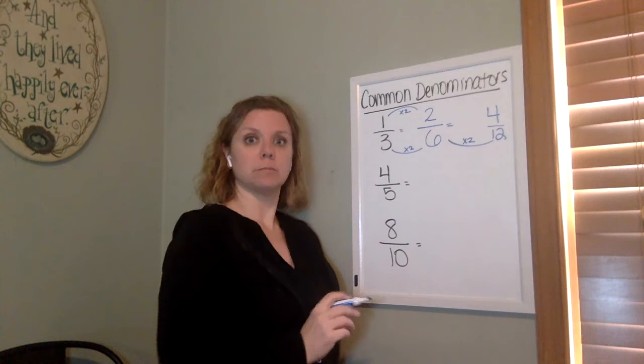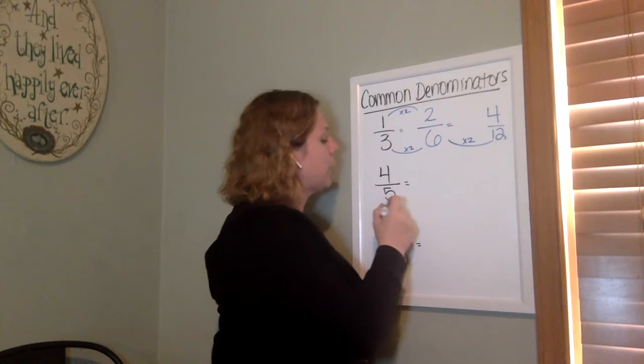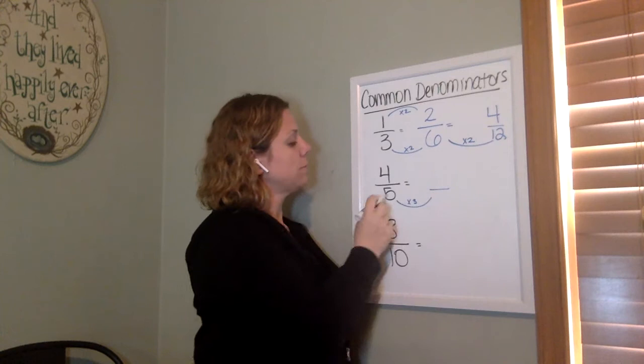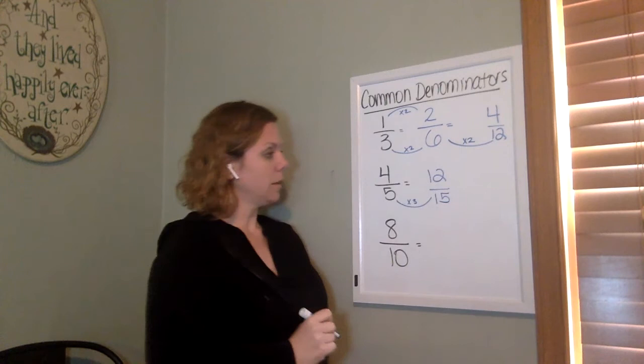Okay now try it for four fifths. Four fifths. So for four fifths, let's just say for fun I want to do times three to find an equivalent fraction. So five times three is 15. Four times three is 12. Twelve fifteenths.